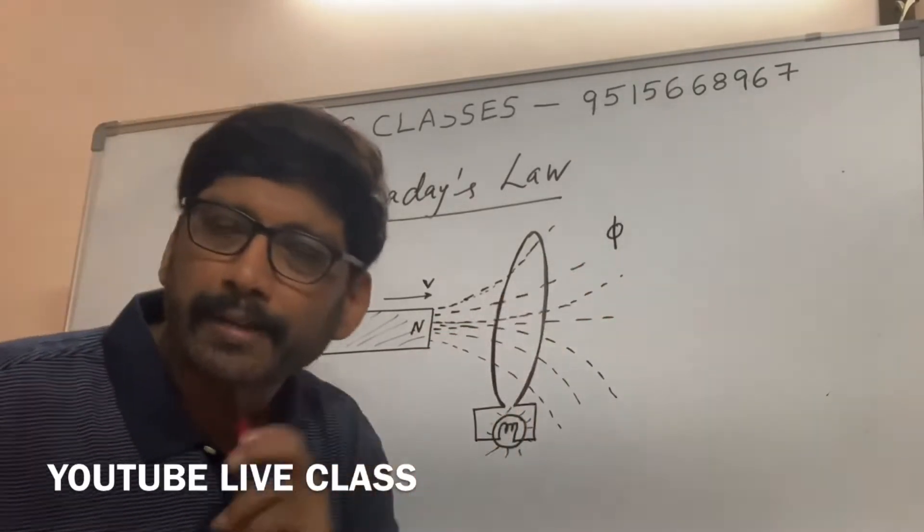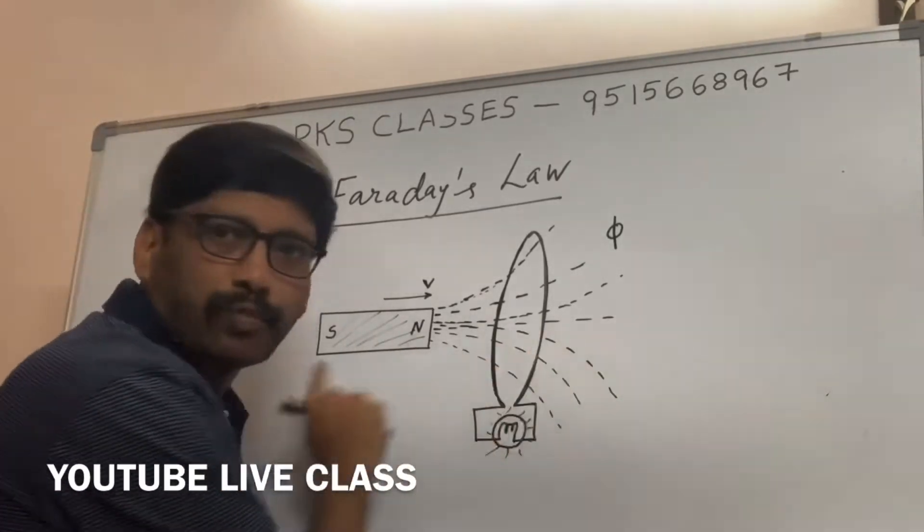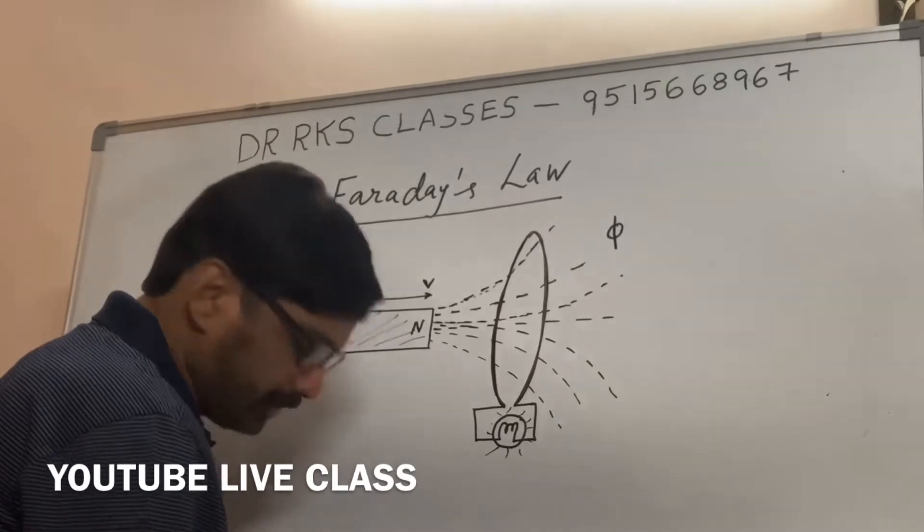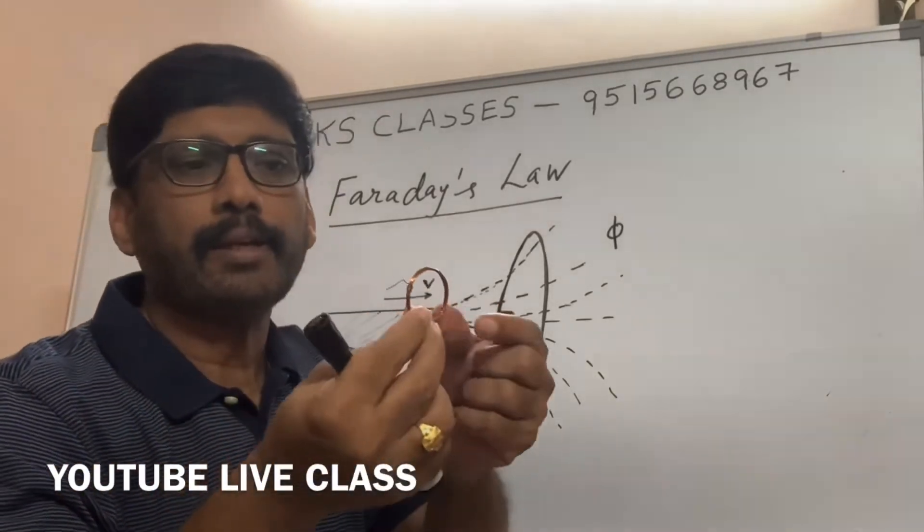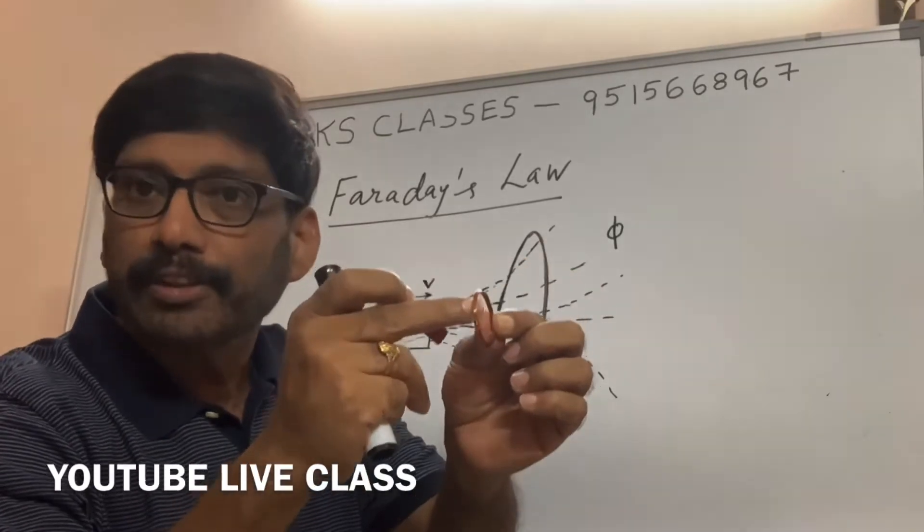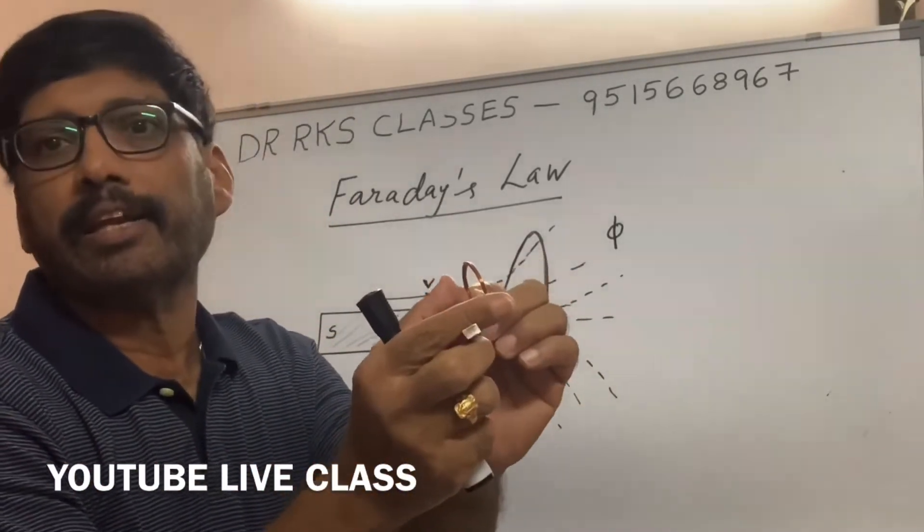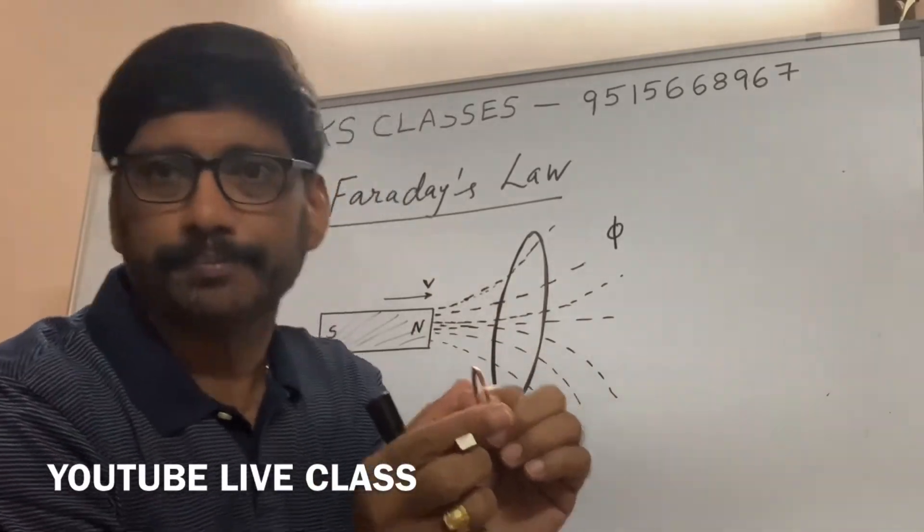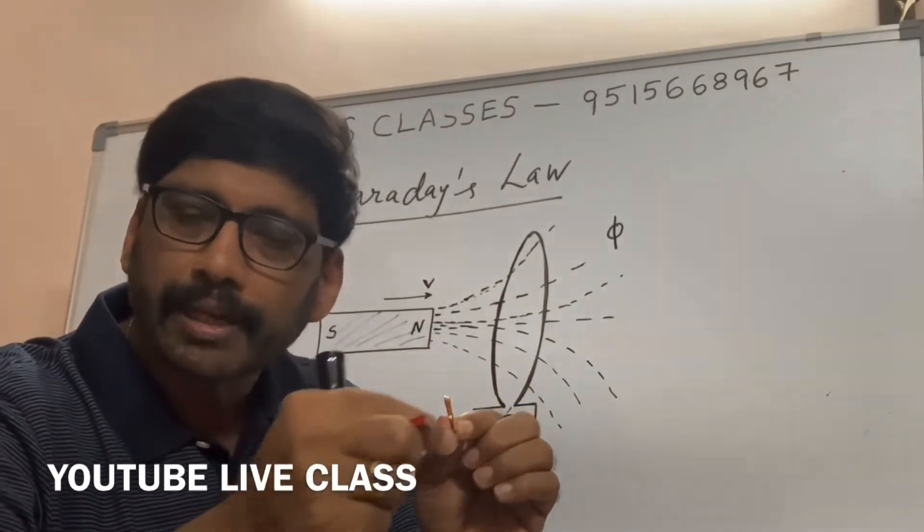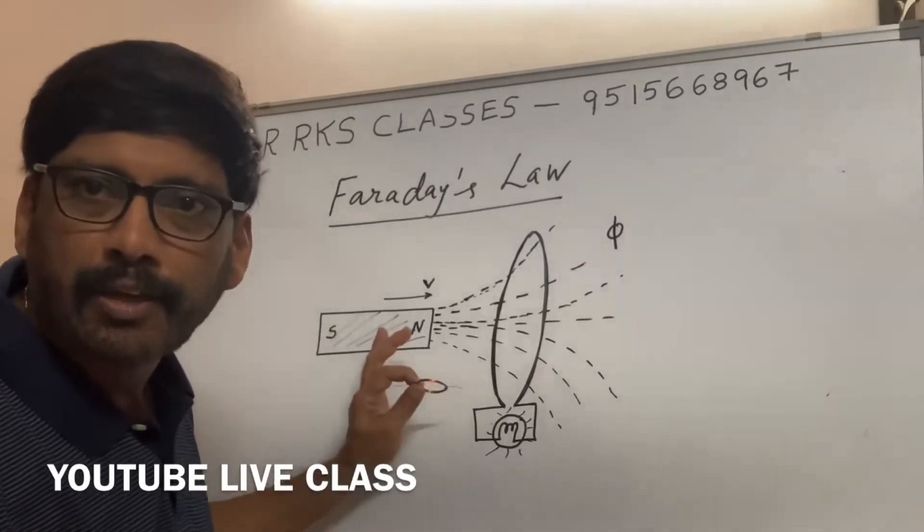So what Faraday's first law says is, whenever the magnetic flux passing through the coil, this is the coil, EMF generated or voltage developed. When I connect a bulb across this coil, the bulb glows. That's what Faraday's first law says.